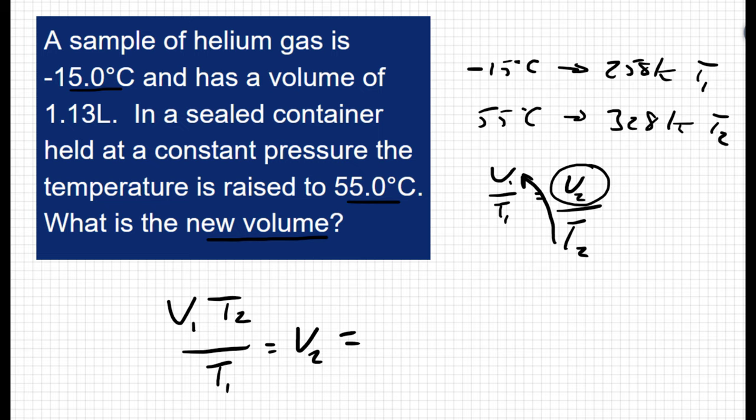So now I can plug in my numbers. V1 is 1.13 liters. T2 in the correct units is 328 Kelvin. And T1 in the correct units is 258 Kelvin. I get 1.44 liters, which is a much more appropriate answer.